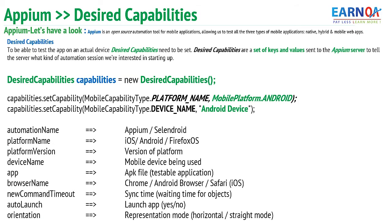Basically in Appium the desired capabilities play an important role. What is a desired capability? The desired capabilities are the configurations required to be specified in the Selenium WebDriver script, so that the Appium can read and understand them, and based on that it can create a testing platform for us.